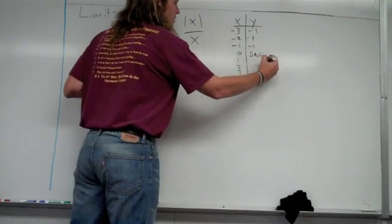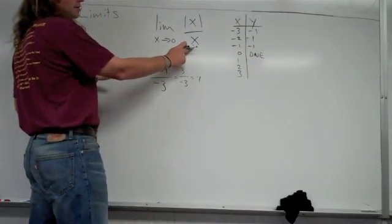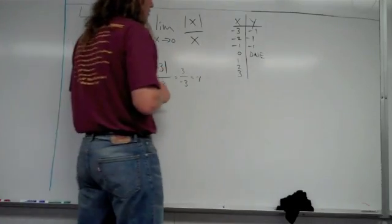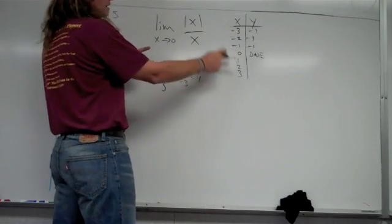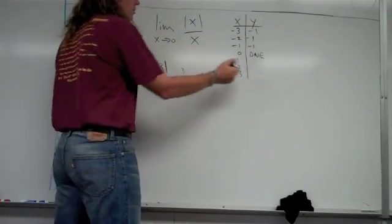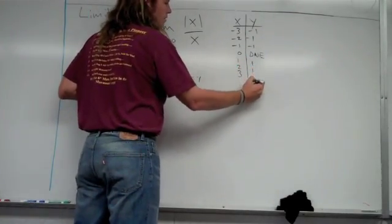And 0, it does not exist. There's no value because when you plug 0 in, you get 0 in the denominator, so therefore there's no value there. You can't divide by 0. When I plug 1 in, when I take the absolute value of 1, it's still just 1, so it's going to be 1 over 1, and therefore this will be 1 along with all these.